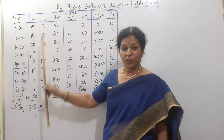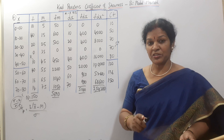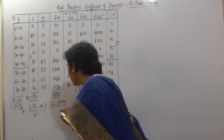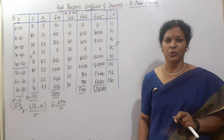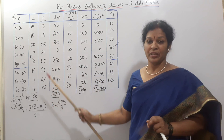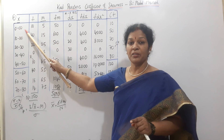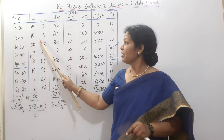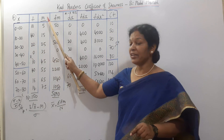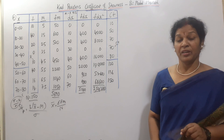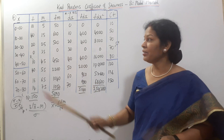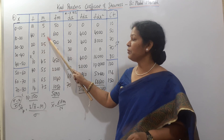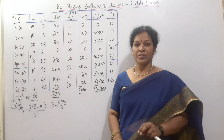Now we set up the calculation table. First, x-bar equals sigma FM divided by n. We need a column for the mid value M, and a column for FM — that is, frequency into mid value. For example, 10 into 5 is 50, and 40 into 15 is 600. That gives us the FM column.